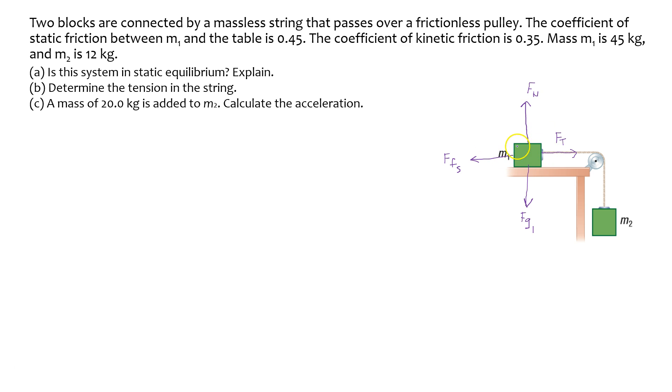So that would be the free body diagram for mass 1. Now the free body diagram for mass 2 would be that there is a force of gravity on it, so Fg2, and there is tension as well. So same tension force as mass 1 is experiencing. So the tension within the rope is the same. Anywhere in the rope the tension is the same.